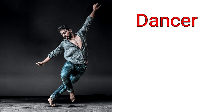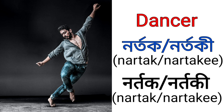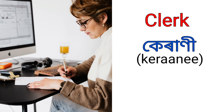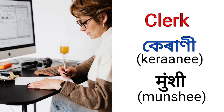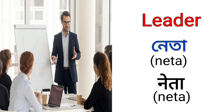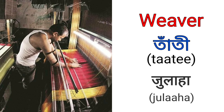Dancer is called Nortok or Naritaki in Assamese, meaning Nasuta, and Naritaki in Hindi, meaning Nasnewala. Clark is called Kerani in Assamese and Munshi in Hindi. Leader is called Neta in Assamese and Neta in Hindi. Weaver is called Tati in Assamese and Julaha in Hindi.